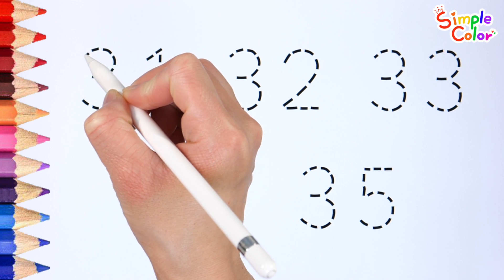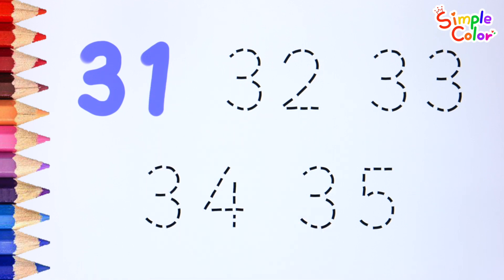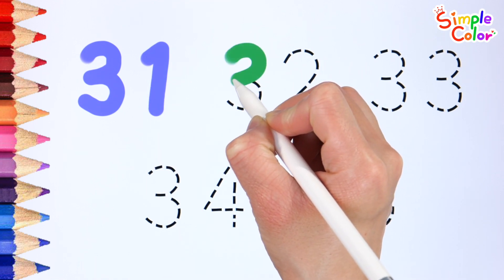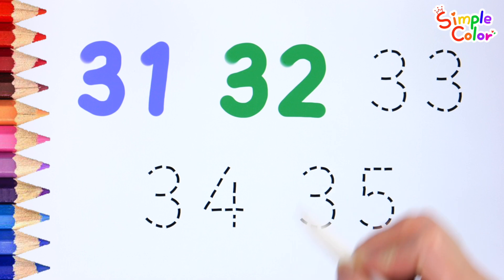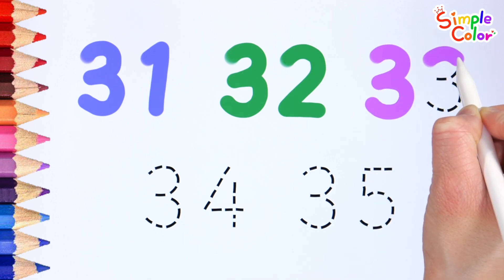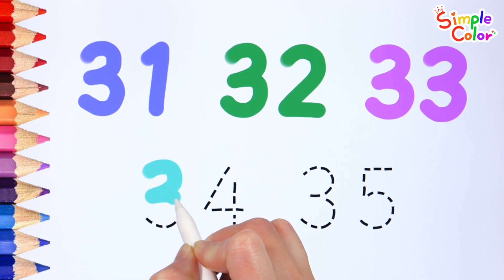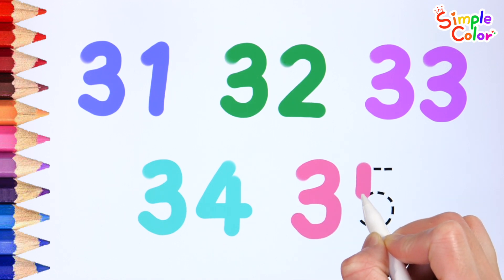Let's write from 31 to 35 along the dotted line. 31, 32, 33, 34, 35.